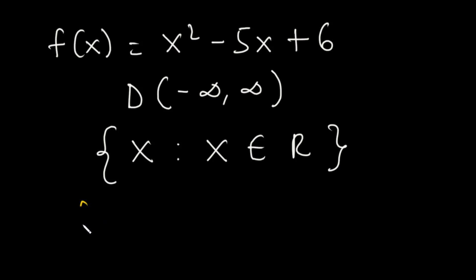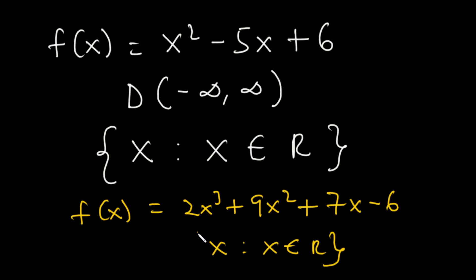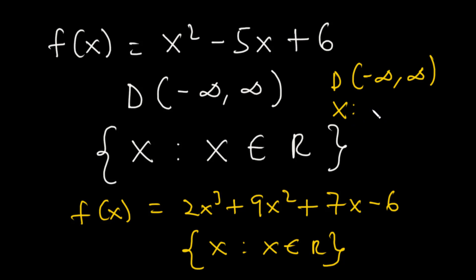Likewise, if you have a polynomial — say f of x is equal to 2x cubed plus 9x squared plus 7x minus 6 — the domain is going to be the set of all real numbers from negative infinity to infinity, written as x is such that x is the set of all real numbers. So the idea is: when there are no fractions or square roots but only polynomials, the domain is from negative infinity to infinity.